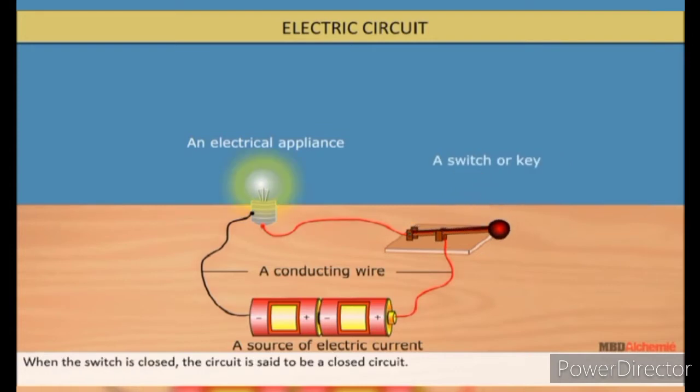When the switch is closed, the circuit is said to be closed circuit. In this condition, current flows and appliance works. Example, the bulb glows.